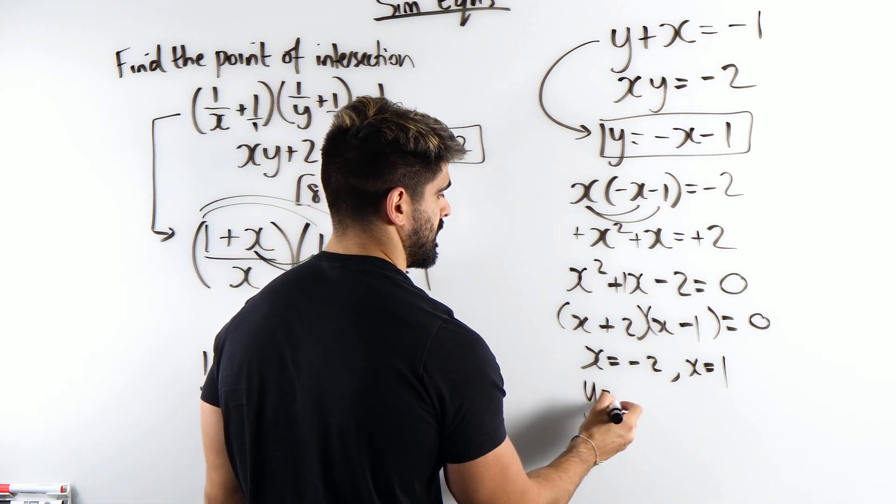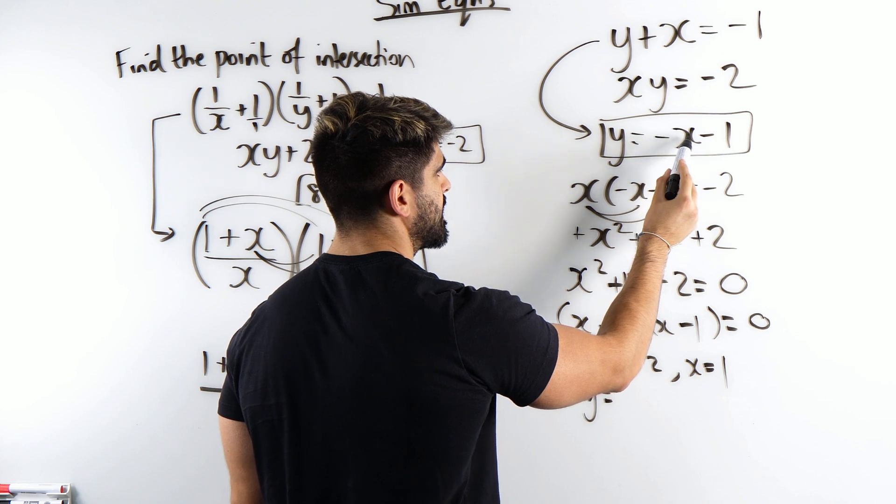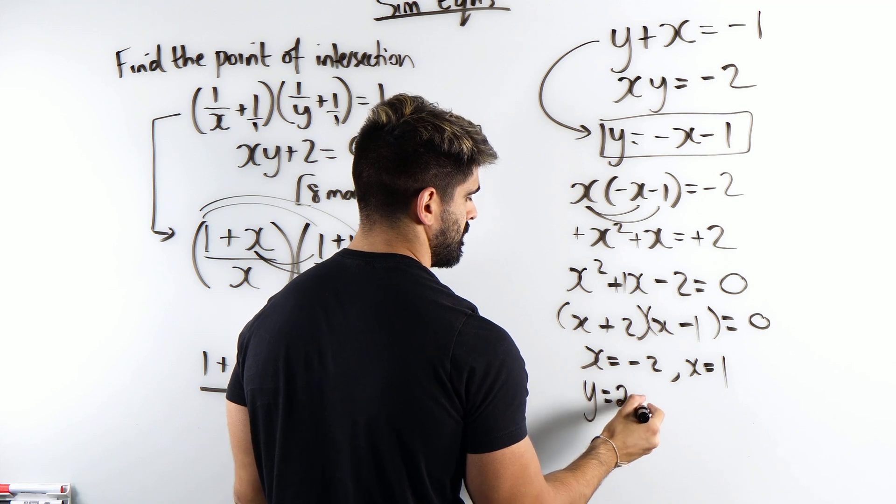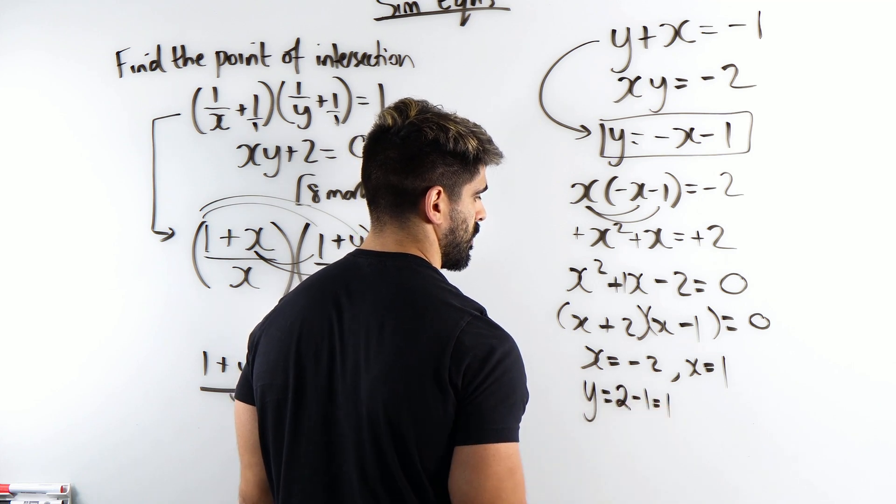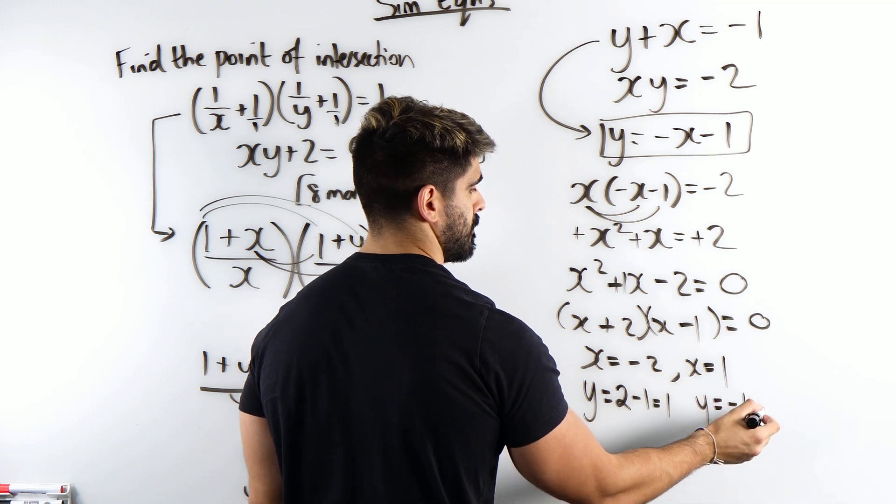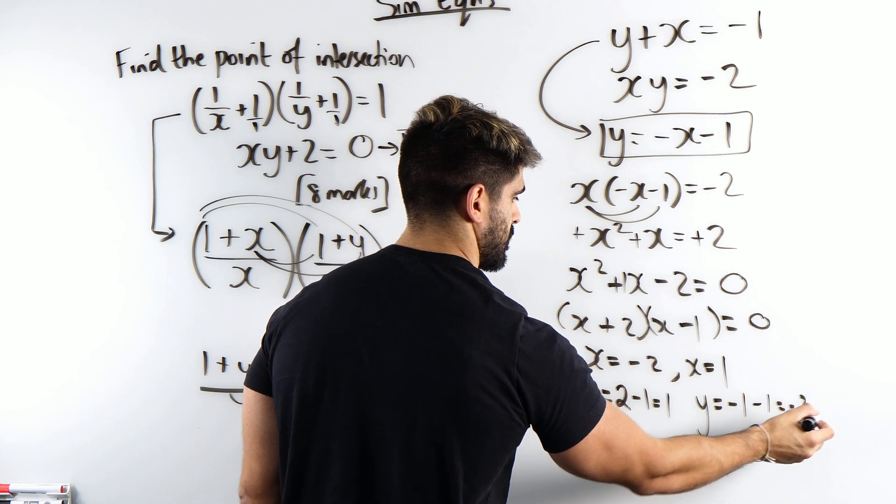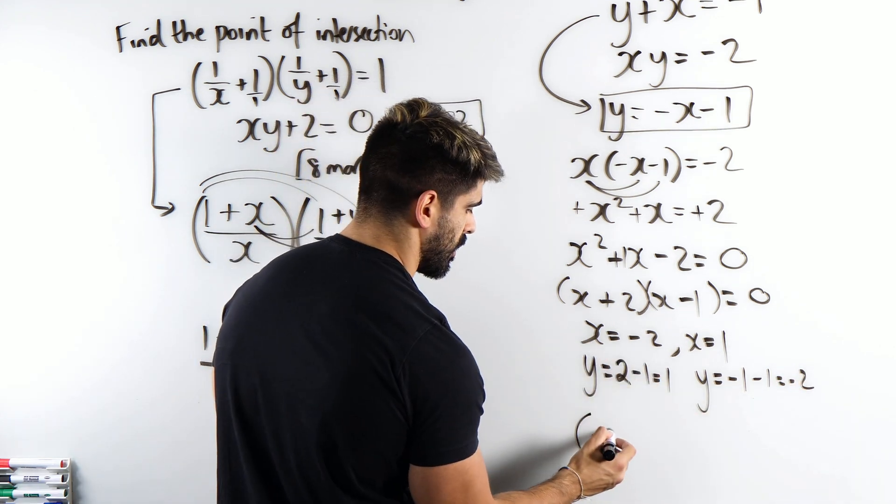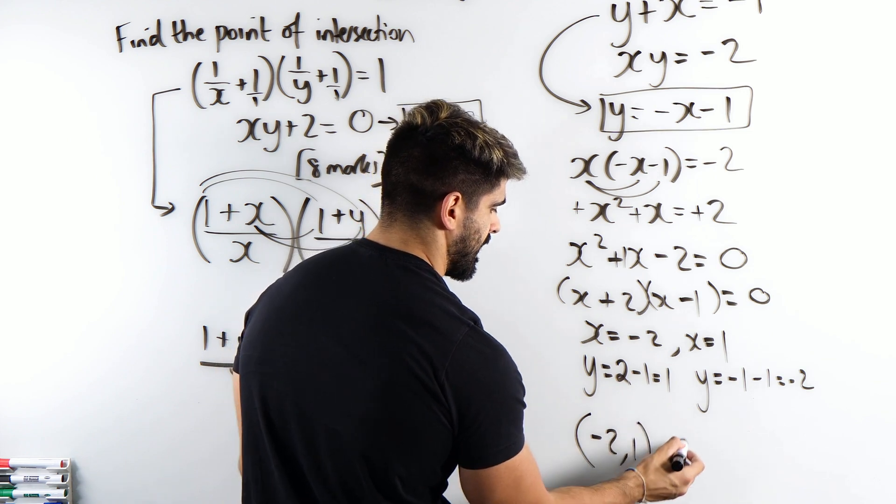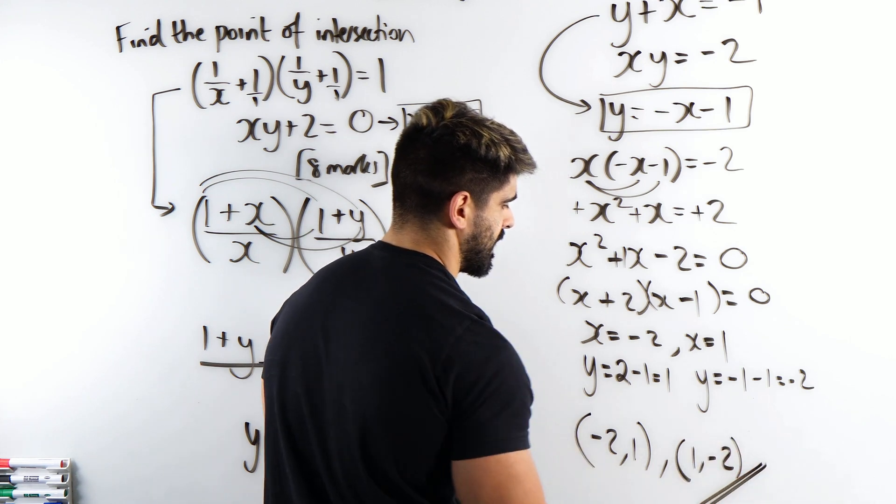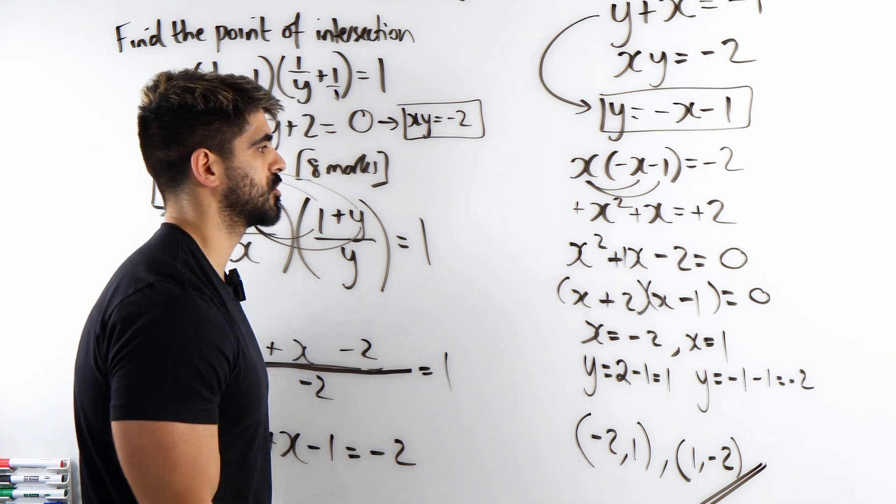Y is found by doing the negative of x minus 1. The negative of x minus 1 is 1. Here, the negative of x minus 1 is minus 2. And there you go. Our answer or answers is minus 2, 1. And the other solution is 1, minus 2. And that is a beautiful solution.